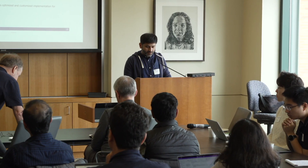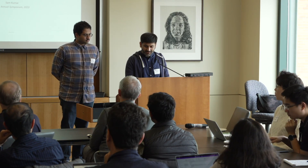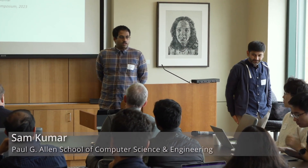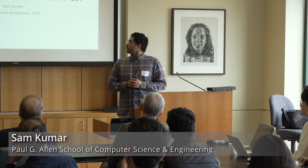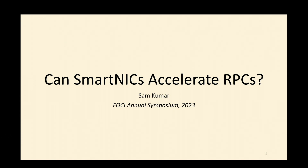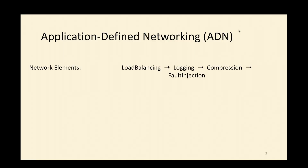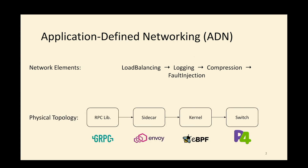Next is Sam Kumar, a postdoc, talking about hardware acceleration using SmartNICs. A quick recap of relevant ADN aspects: network elements are stages in processing an RPC, mapped to the physical topology. Application-defined networking assigns network elements to particular locations — load balancing may happen in the RPC library, logging in the sidecar, and so on. The question is: where do SmartNICs fit? SmartNICs differ from regular NICs by having compute resources — for example, a CPU and associated memory — directly on the NIC itself, commercially available from Mellanox and Marvell.